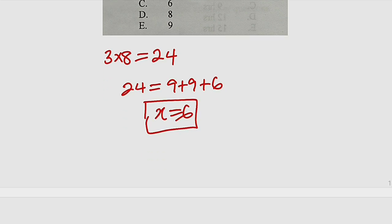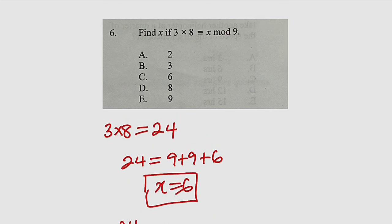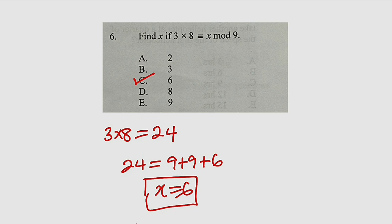Another way you can do that is to take this 24 and divide by 9. It will give us 2 exactly with a remainder of 6. And I told you modular arithmetic is concerned with the remainder, and hence the value of x is equal to 6, which is option C.